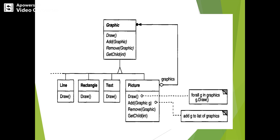For the graphics system, class graphics declares the operations to draw a specific graphic object. It also declares the different operations that composite objects share, such as operations accessing and managing its children. The subclasses here — line, rectangle, text — define the primitive graphics objects.